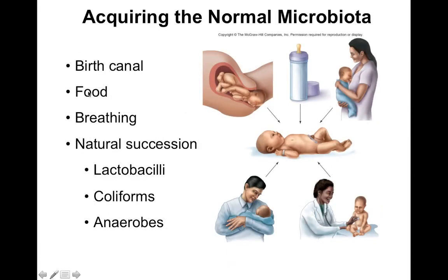How do we acquire these microbes? Through the birth canal, from food, breathing, and natural succession — just from touching things in our environment. That's where we get our lactobacilli, coliforms, and anaerobes from. A lot of these hang out in soil, so playing in, coming near, or touching the soil allows for the natural succession of these microbes.